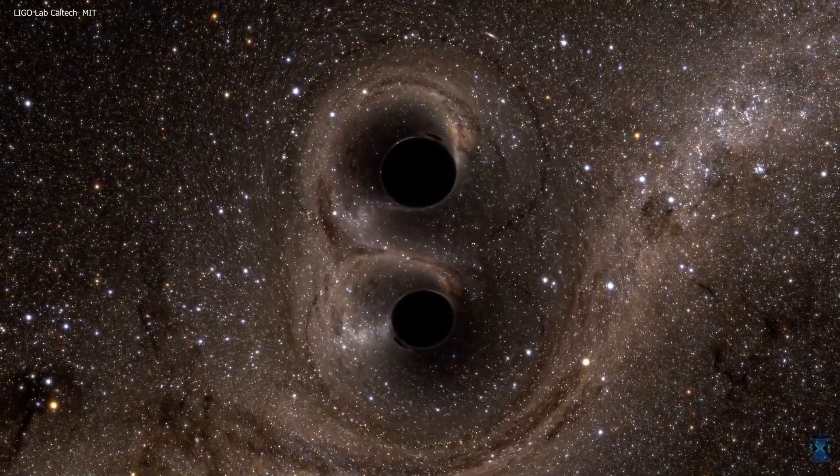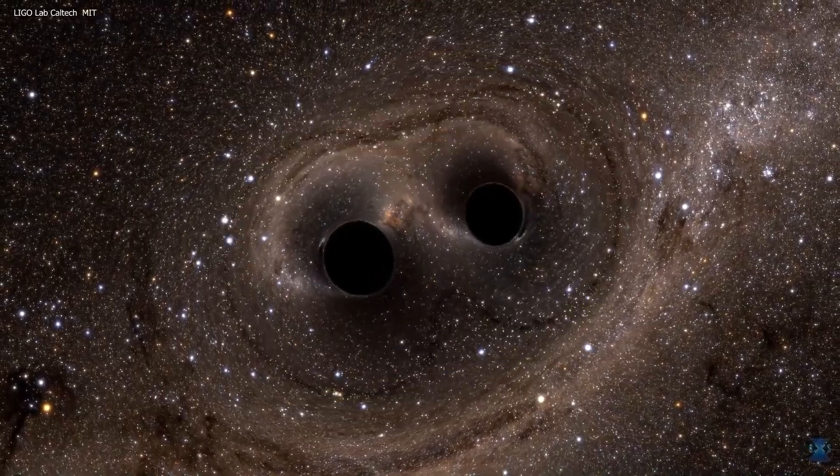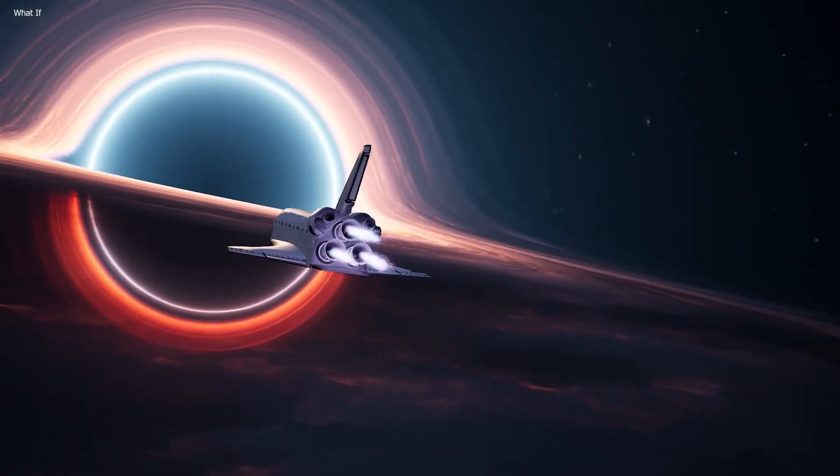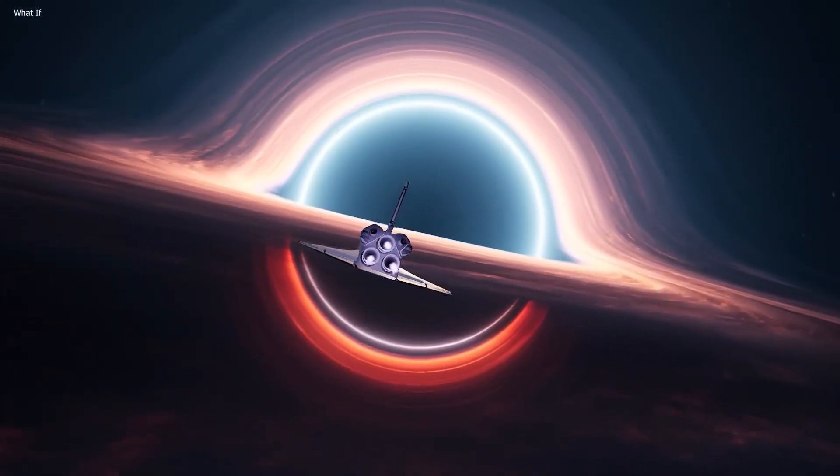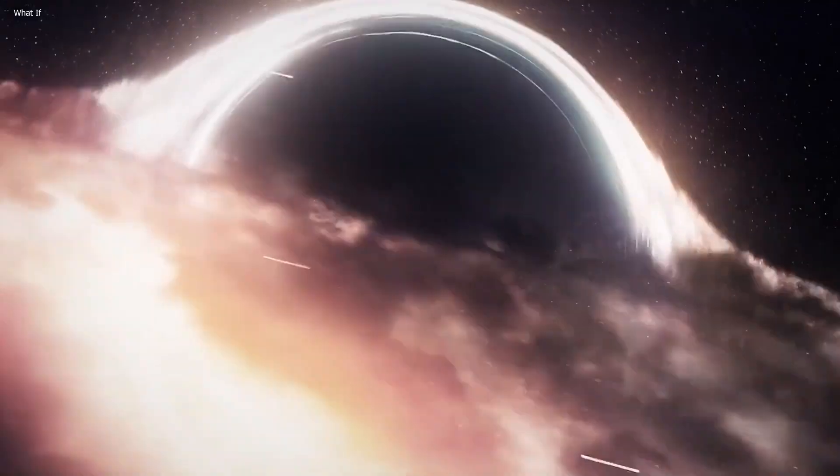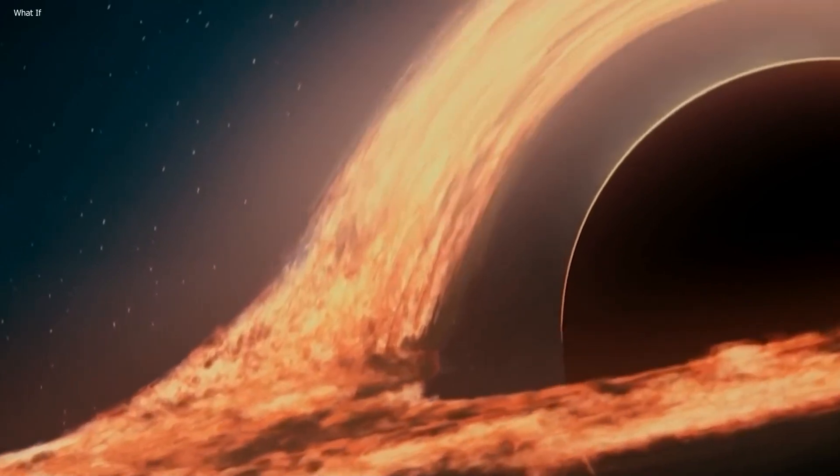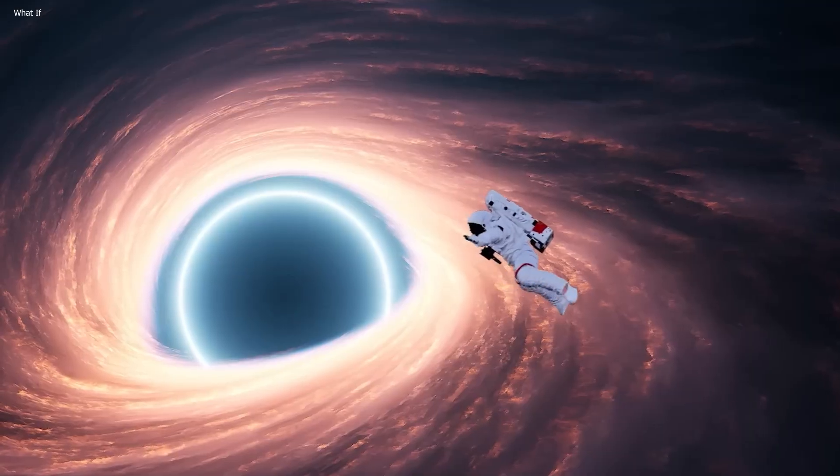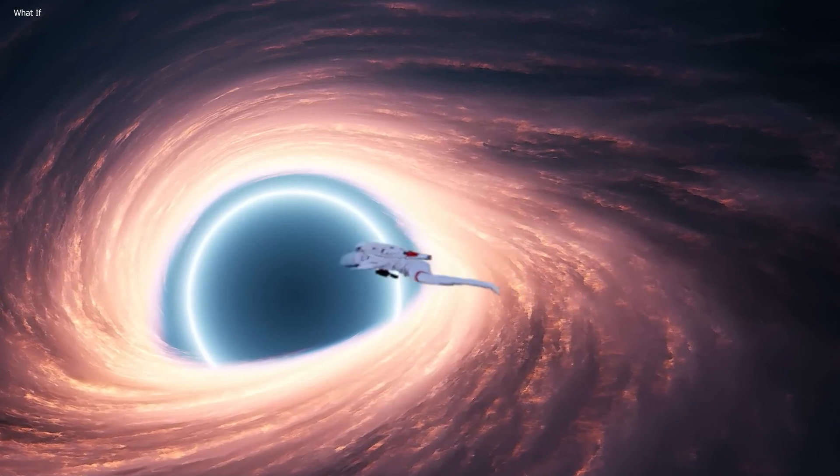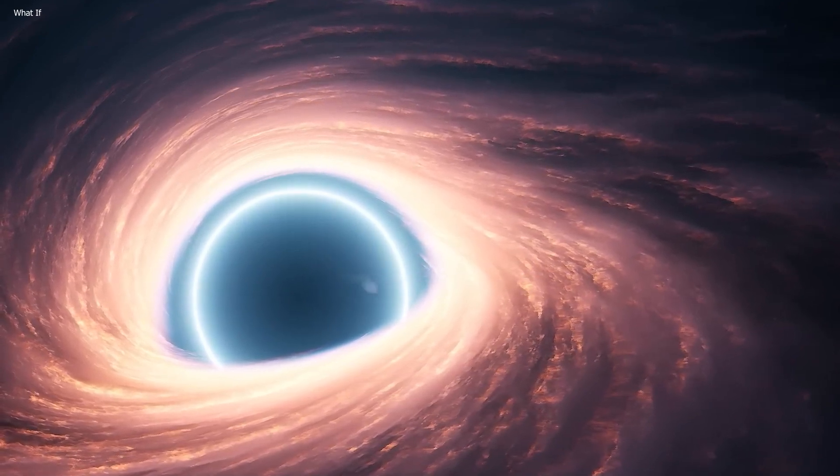But before reaching this point, there are two layers of the black hole that one must travel through in order to reach this singularity. The first layer is known as the outer event horizon, a boundary surrounding the mouth of each black hole, where anything entering it will not be able to escape due to its incredibly strong gravitational pull.